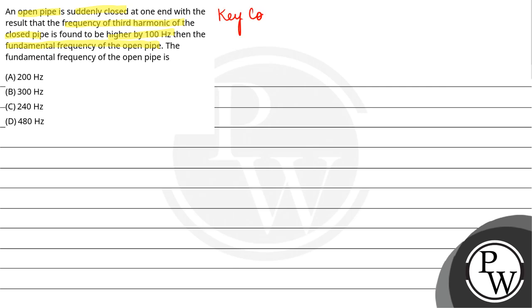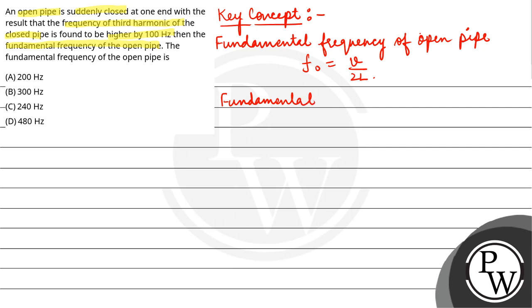The key concept here is the fundamental frequency of open pipe, given by the relation F_O equals V by 2L, and fundamental frequency of closed pipe, given by the relation F_C equals V by 4L.